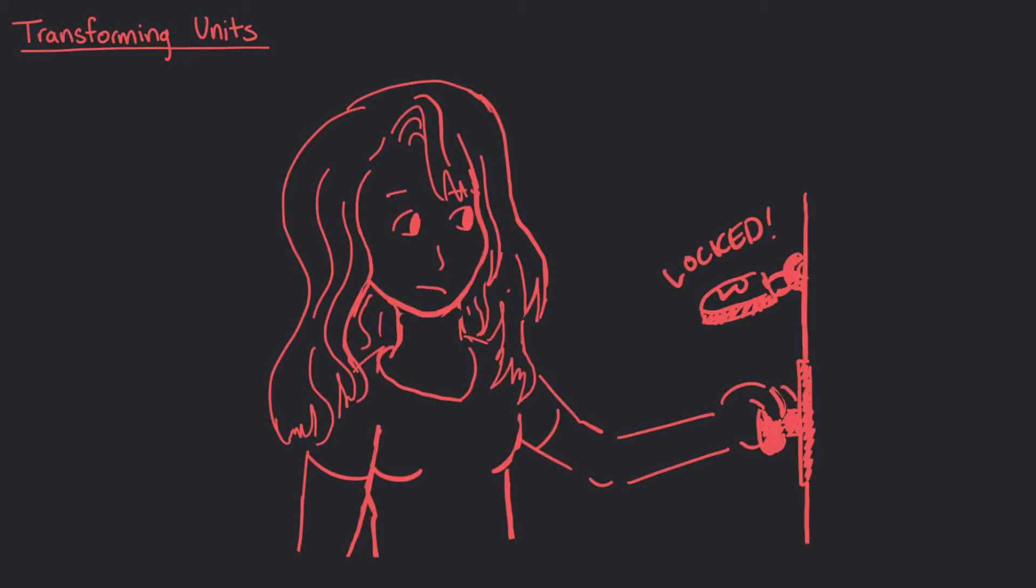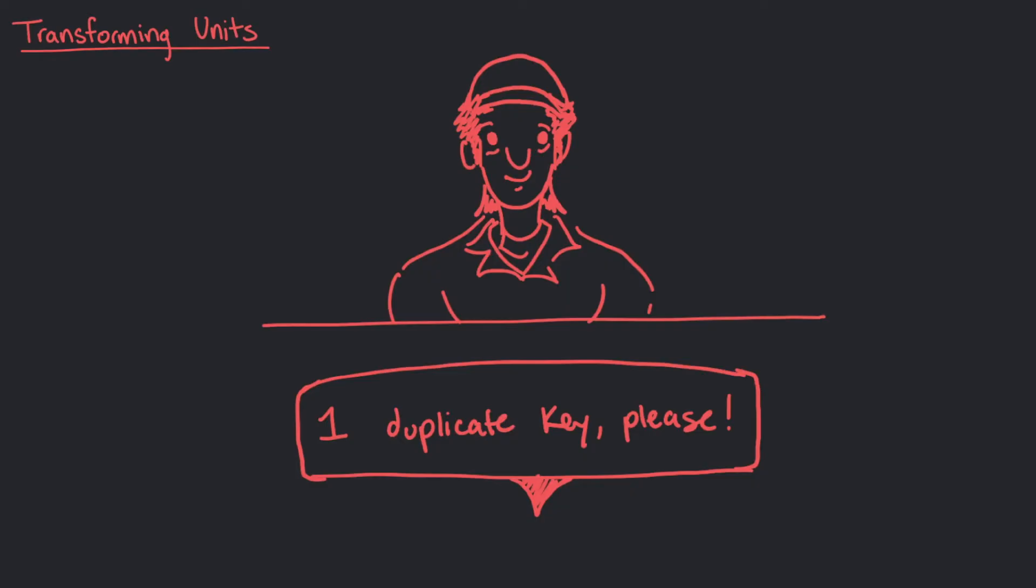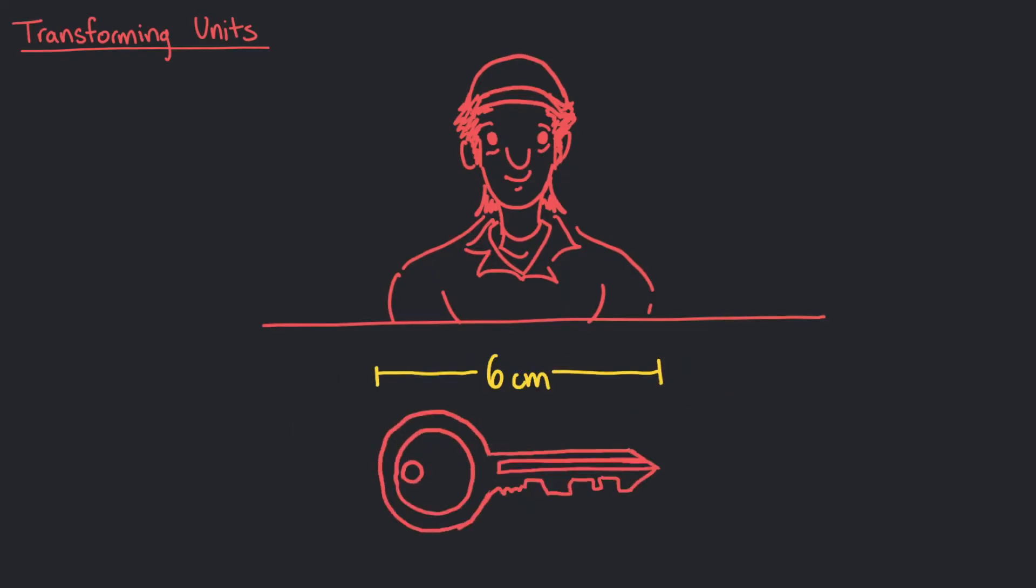Tina's locked out of her house. When she goes to the locksmith for a duplicate key, she tells him that the length of the key is 6 centimeters. The locksmith tells her that he can only visualize the length of this key in the diameter of pennies.